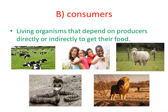The second type is consumers. Consumers are the living organisms that depend on producers, either directly by eating green plants — like cows, sheep, and some humans — or indirectly, like humans who eat animals, as well as snakes and lions.